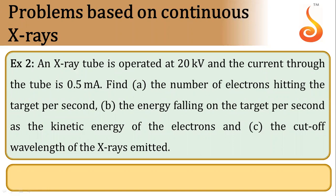So first, find the number of electrons hitting the target per second. In this current of 0.5 milliampere, we need to find how many electrons are hitting per second.